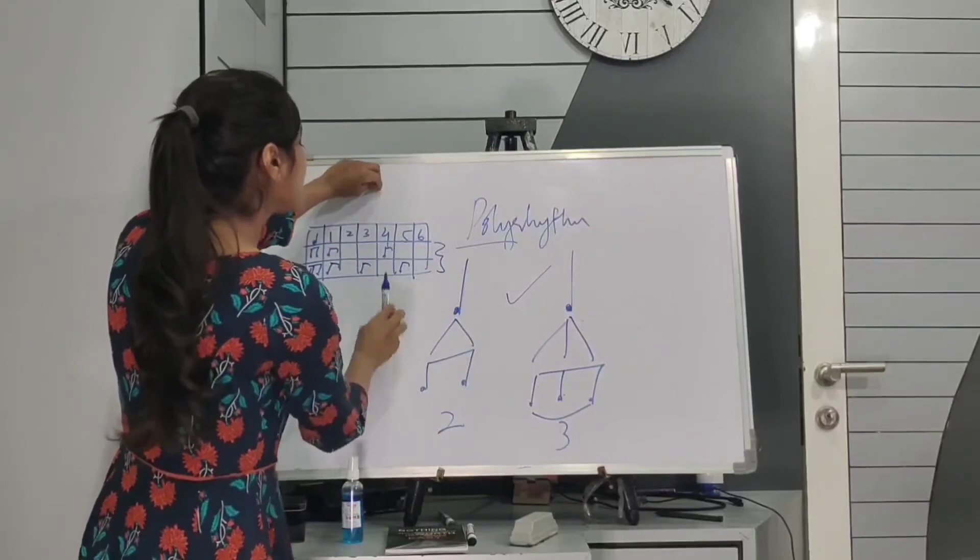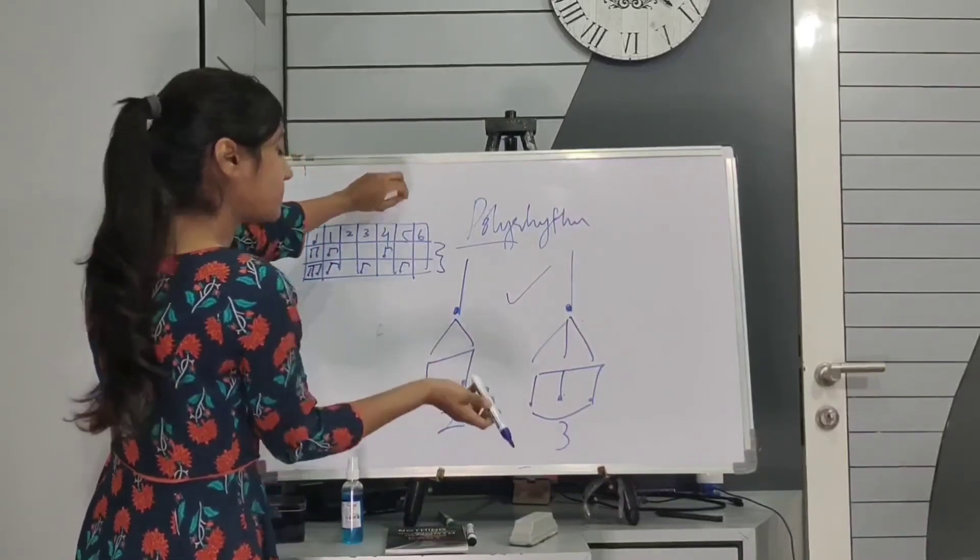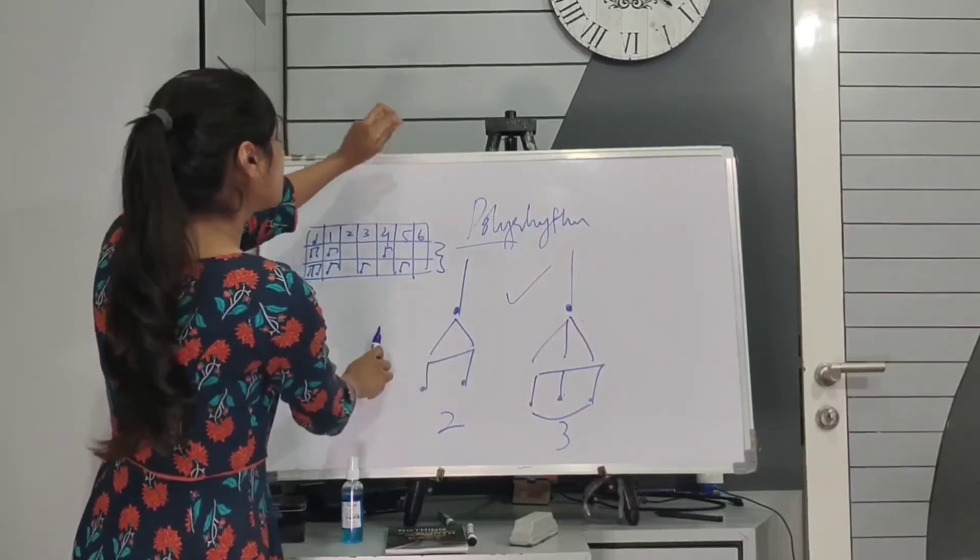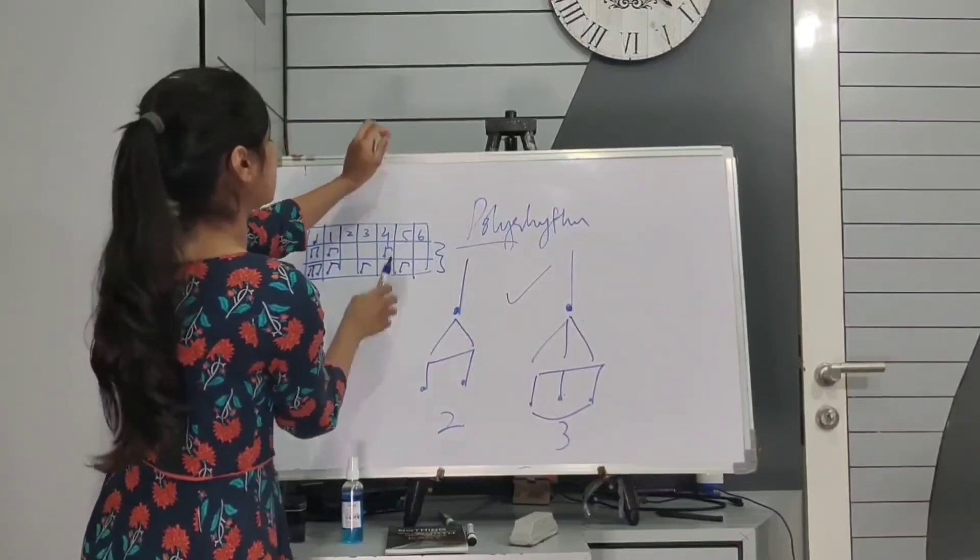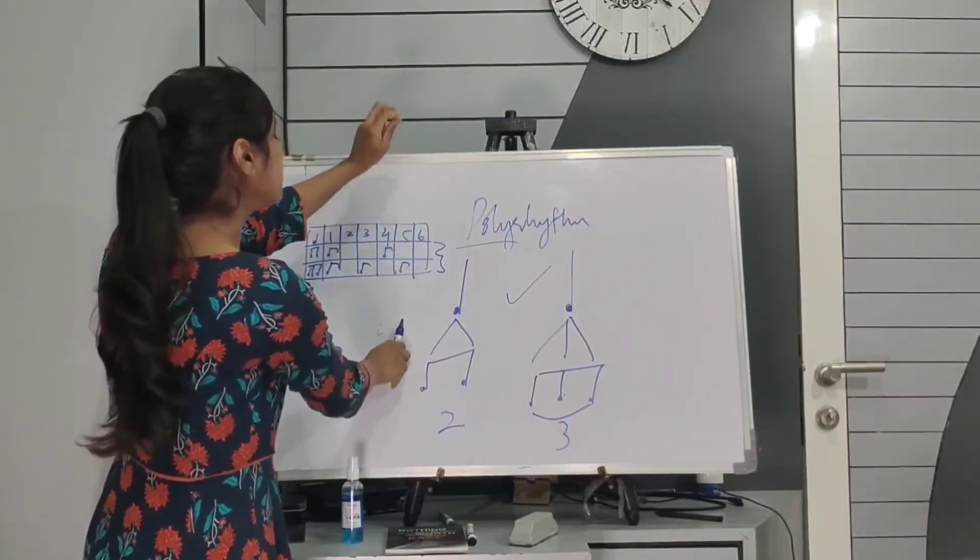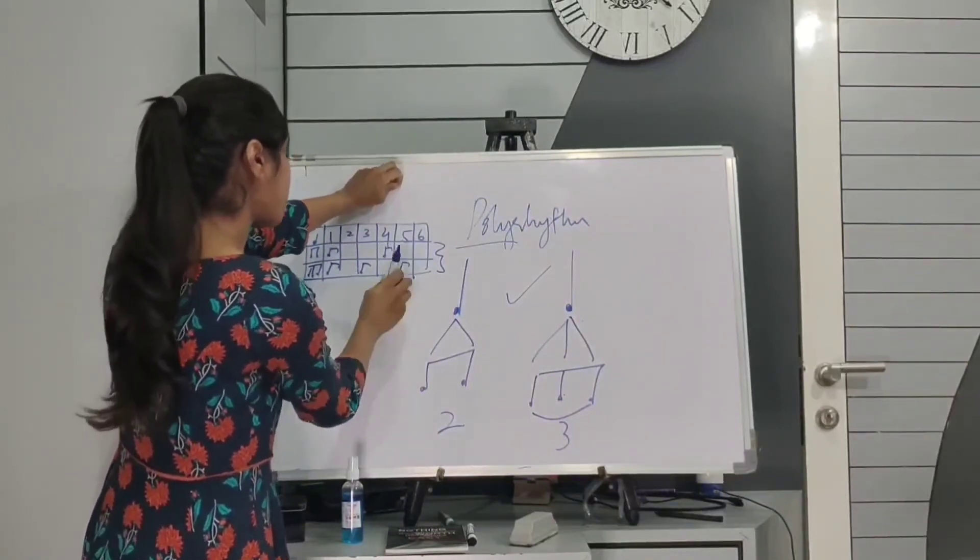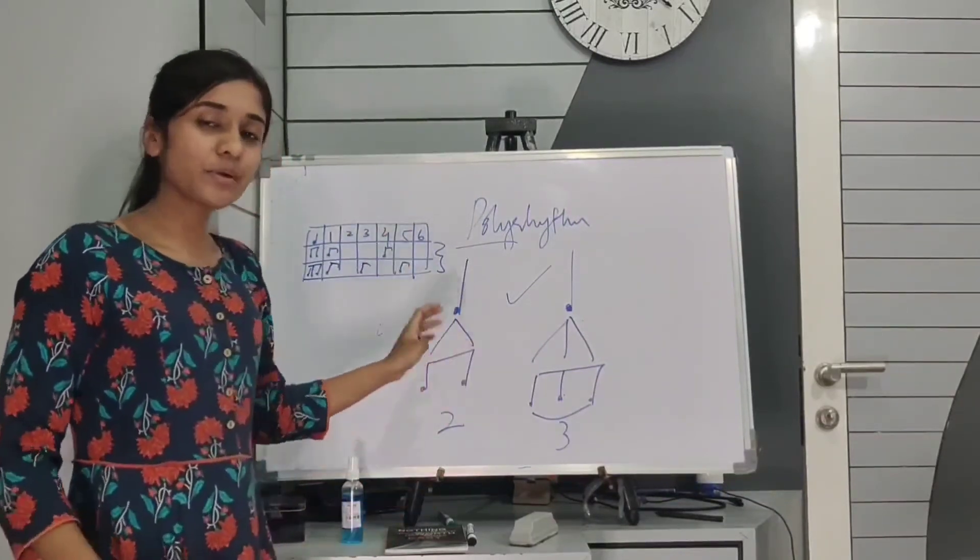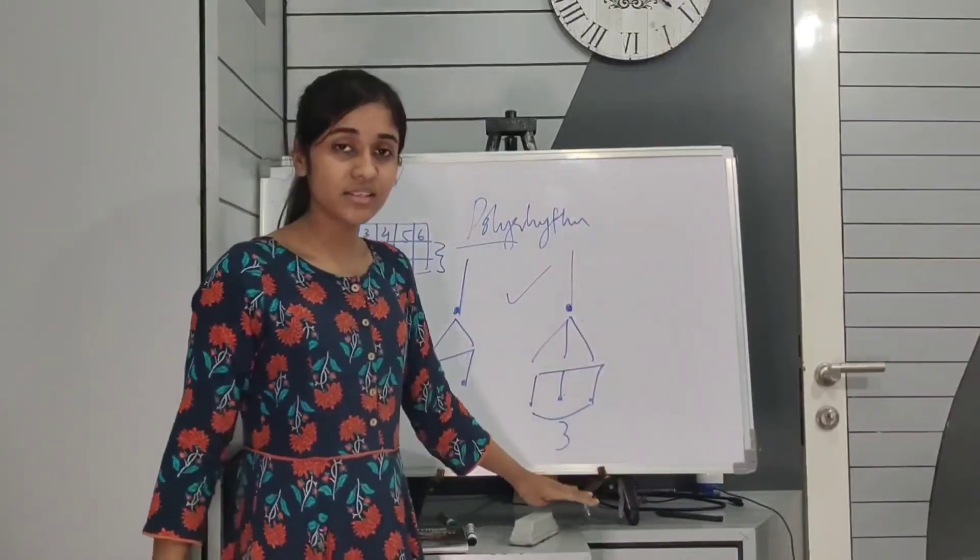So, one, two, three, four, five. No, I have played the opposite. One, two, three, four, five, six. One, two, three, four, five, six. Two, three, four, five, six. So, this gives me the rhythm of two against three.